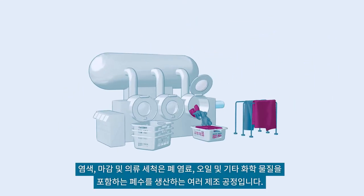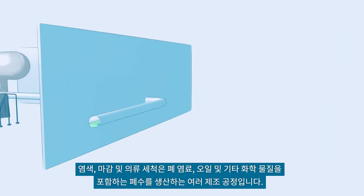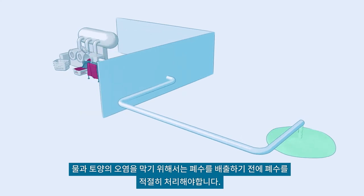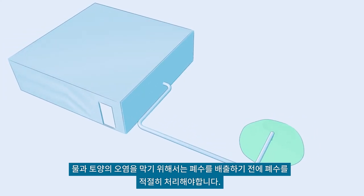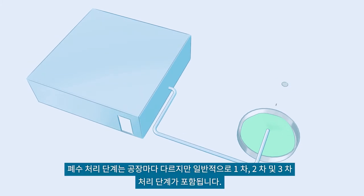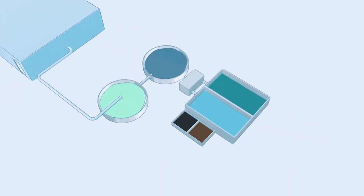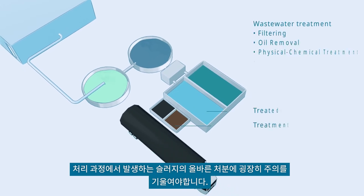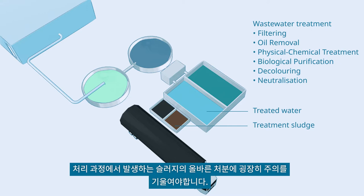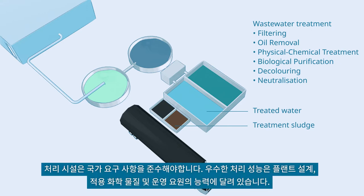Dyeing, finishing, and garment washing are several manufacturing processes that produce wastewater containing waste dyes, oil, and other chemicals. To prevent contamination of water and soil, you need to treat wastewater properly before discharging it. The steps for wastewater treatment differ among factories, but usually include primary, secondary, and tertiary treatment steps. You must pay special attention to the proper disposal of treatment sludge, which is generated during the treatment process. The treatment plant must comply with national requirements. Good treatment performance depends on plant design, applied chemicals, and the competence of the operating personnel.